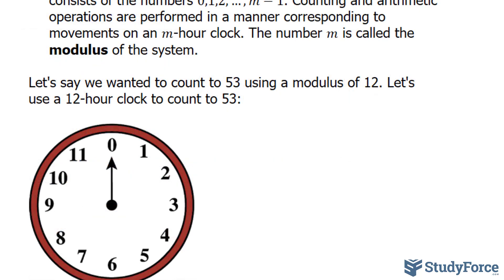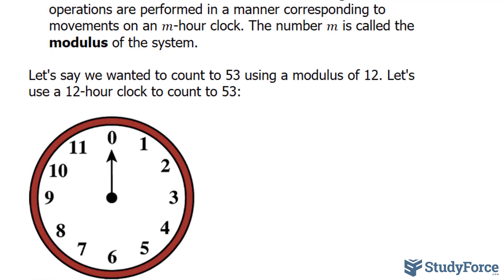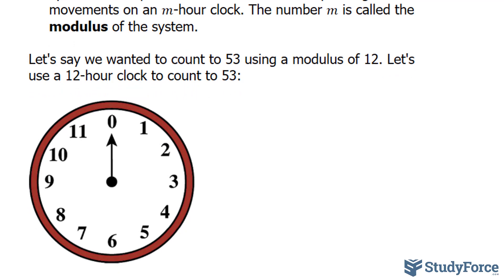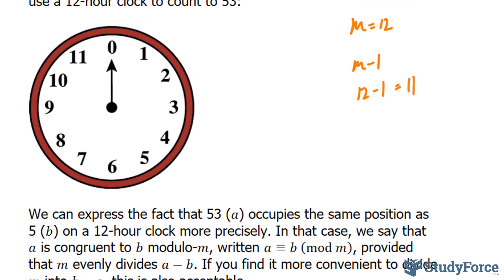Now, if that's confusing to you, let's take a look at a generic example. Let's say we wanted to count to 53 using a modulus of 12. So in this case, M is equal to 12. Let's use a 12 hour clock starting at zero, and remember the last number will be M minus one, so 12 minus one being 11. Starting from zero, we have a clock that looks like this. So to count to 53 in this 12 hour clock,